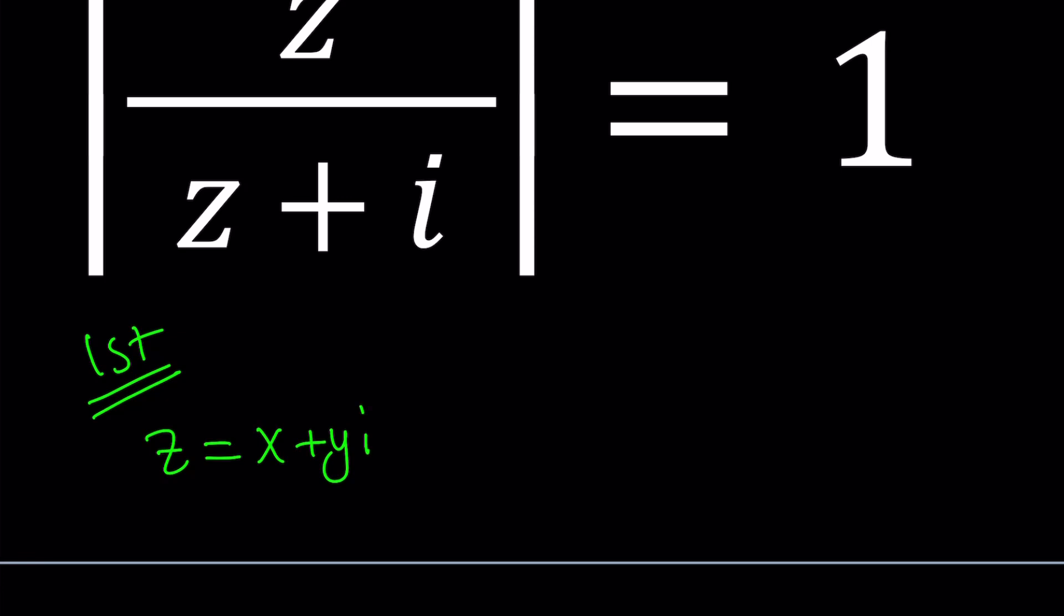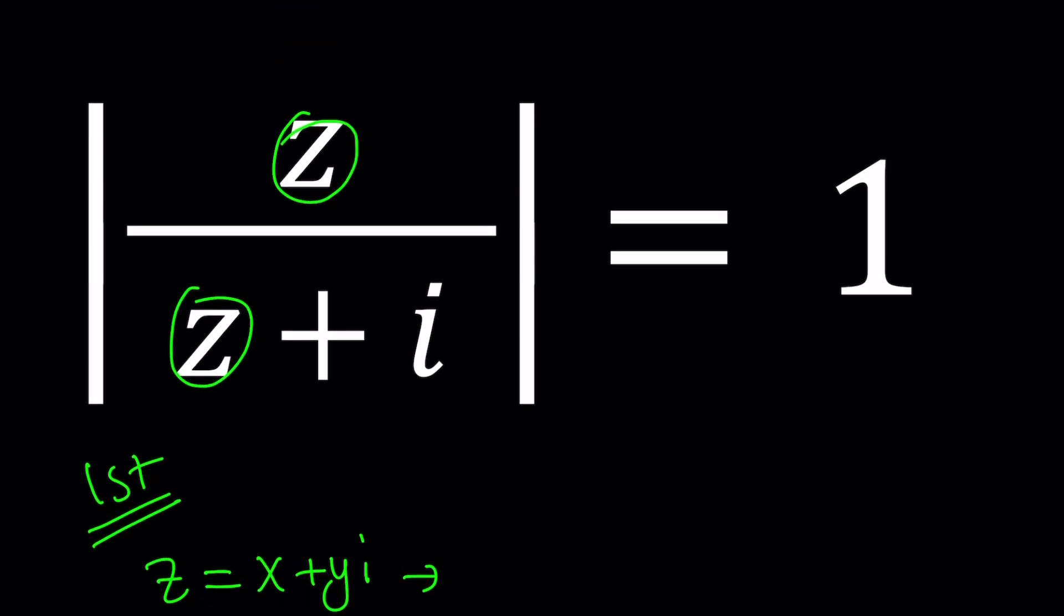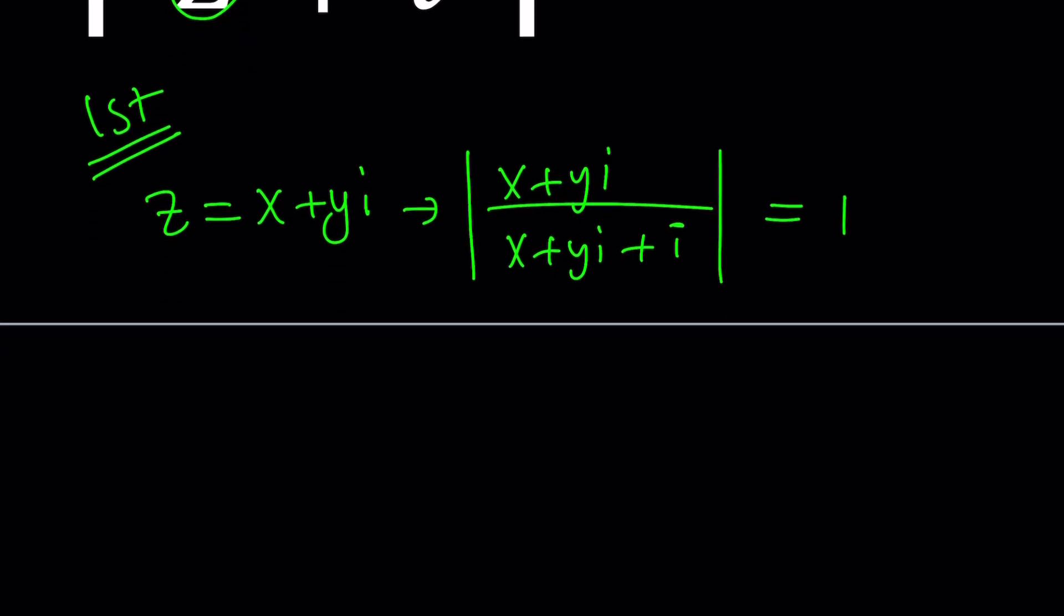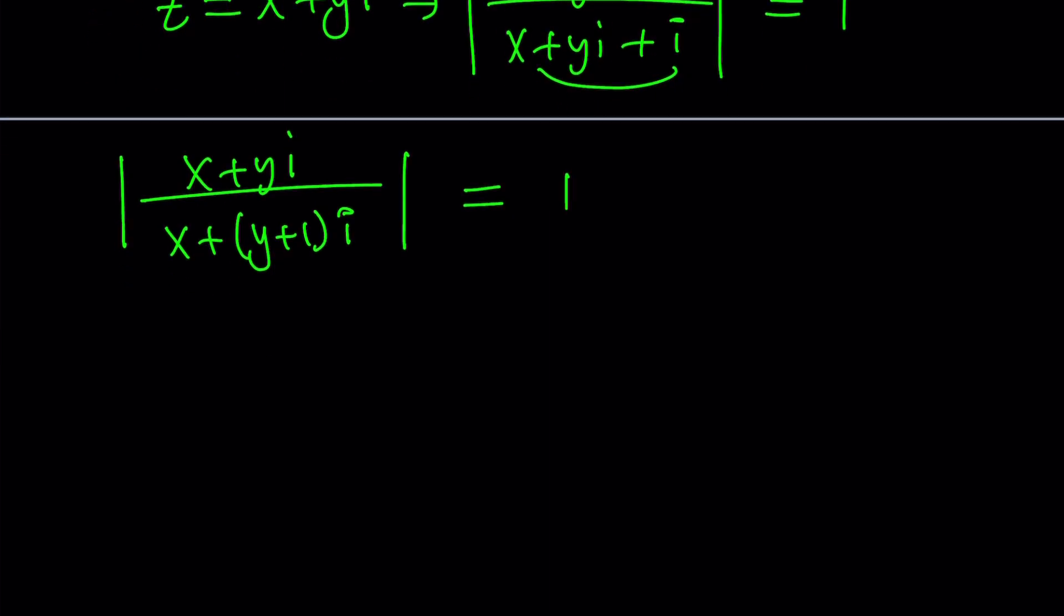So set z equal to x plus yi and then plug it in here. You're going to get x plus yi divided by x plus yi plus i. Take the absolute value of the whole thing and set it equal to 1. Let's simplify the bottom by putting together the imaginary parts. That's going to be x plus the quantity y plus 1 multiplied by i. So we factor the i out.